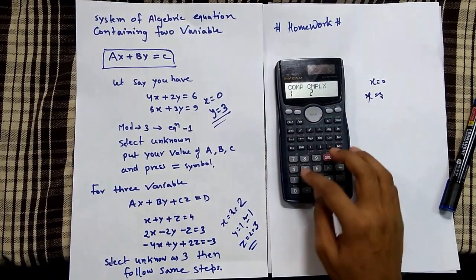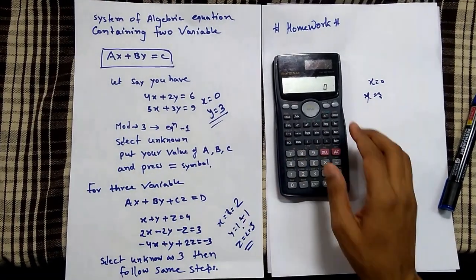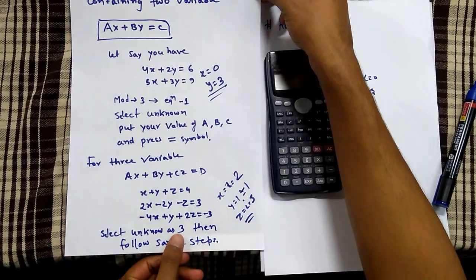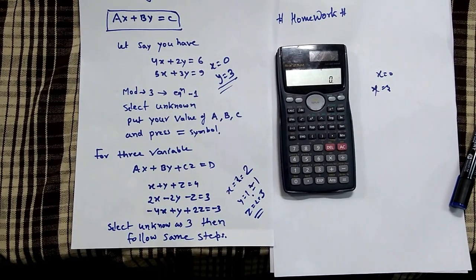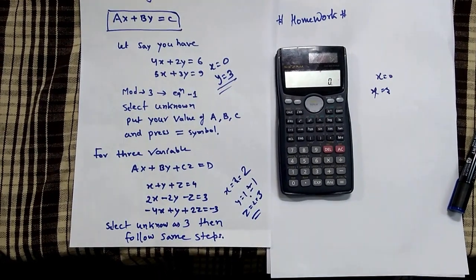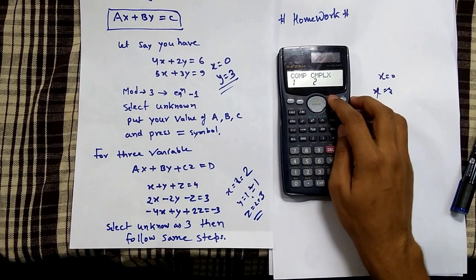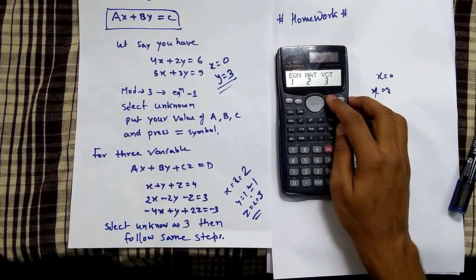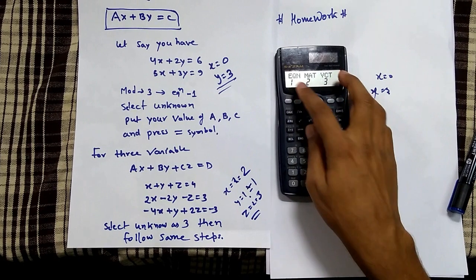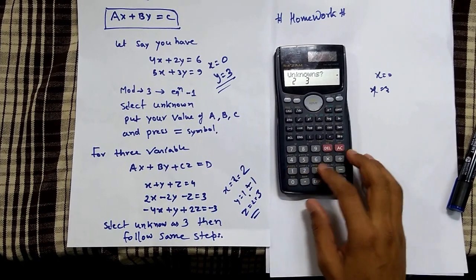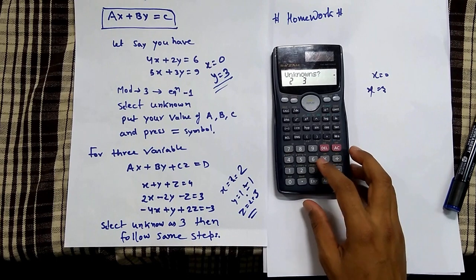Now we'll solve one more example for 3 variables. For 3 variables, the standard equation is ax plus... Press the mode button 3 times until 'equation' appears, then press 1.